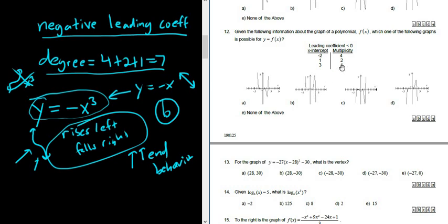However, I wouldn't rely solely on this. For example, if you look at choice C here, it also touches and turns around at negative two, touches and turns around at one, and crosses at three. So the best way to do it is to use this leading coefficient test.